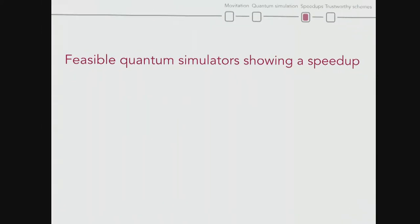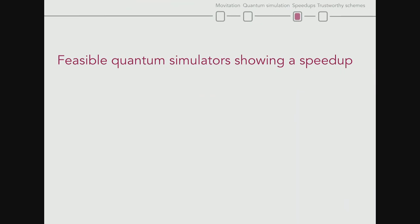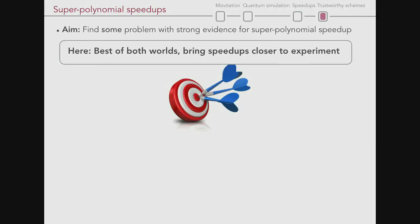Can we think of feasible quantum simulators providing speedup? We want problems with strong evidence for super-polynomial speedup, but combining the best of both worlds, bringing speedups closer to experiment without periodicities of 56 or intractable scalings. Something more reasonable and realistic to present experiments, or close to ones already there, but still with that promise of speedup.